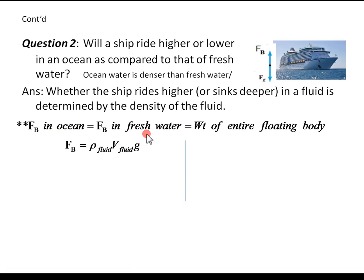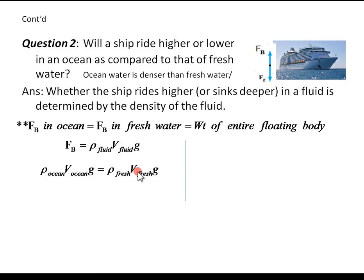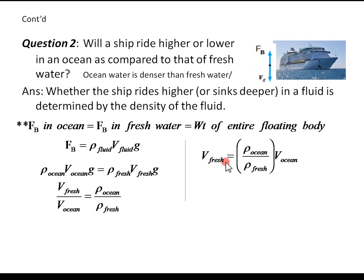This is a very important concept. Buoyant force equals density of the fluid times volume of the fluid times g. Setting buoyant force in ocean equal to buoyant force in freshwater: density of ocean times volume of ocean times g equals density of freshwater times volume of freshwater times g. Cancelling g and rearranging, volume of freshwater equals density of ocean divided by density of freshwater, times volume of ocean.